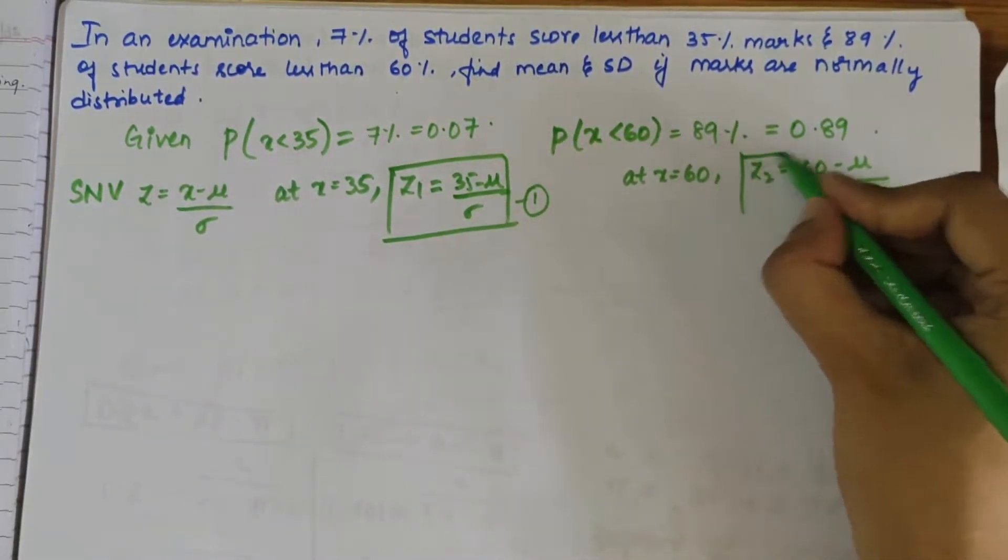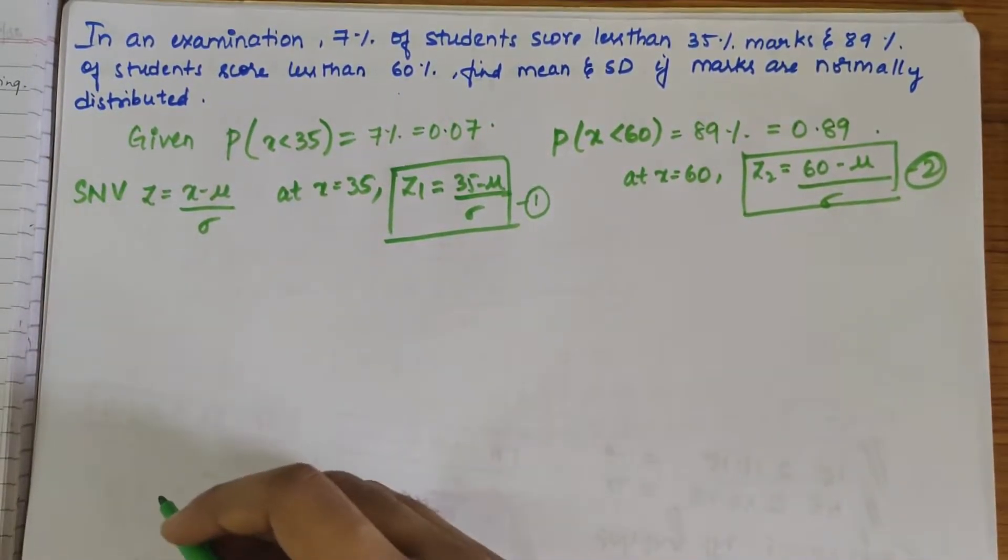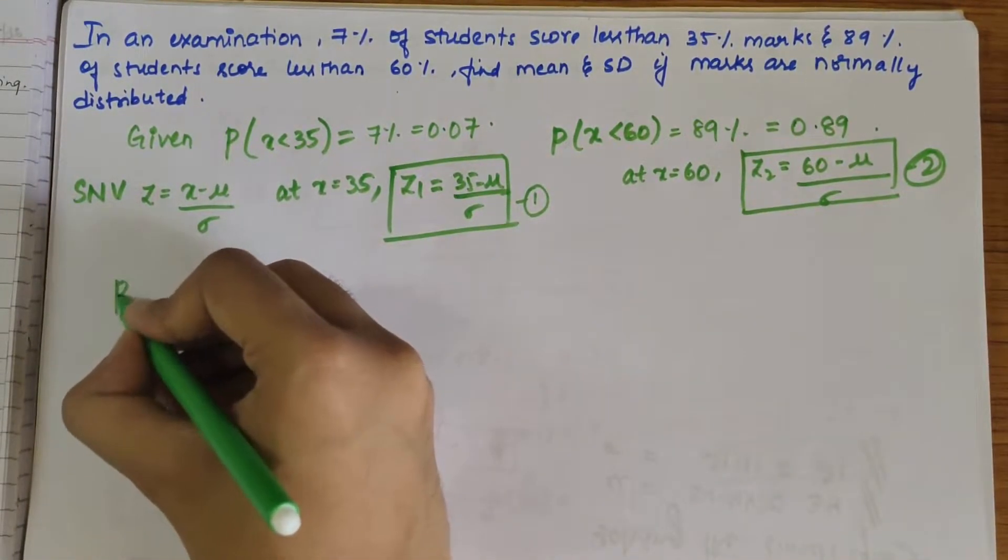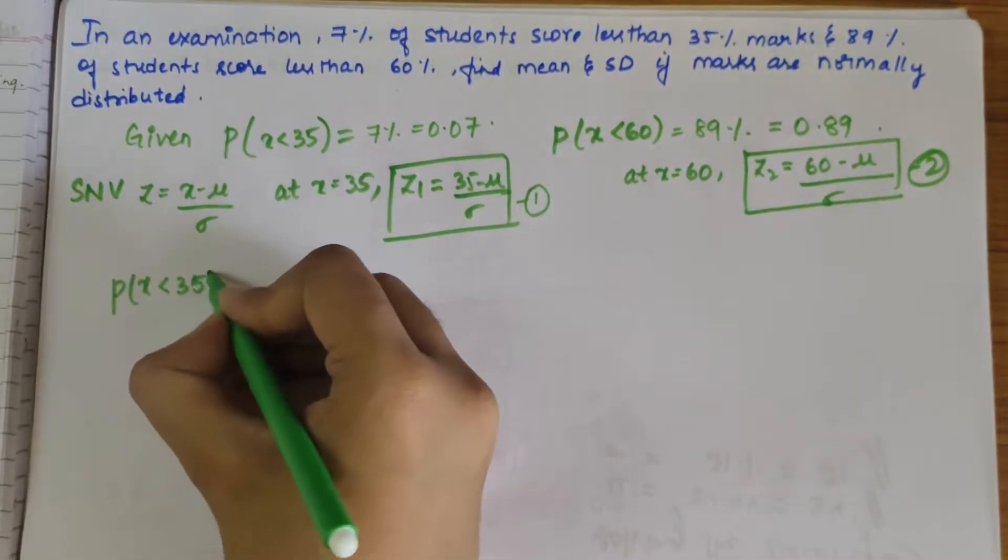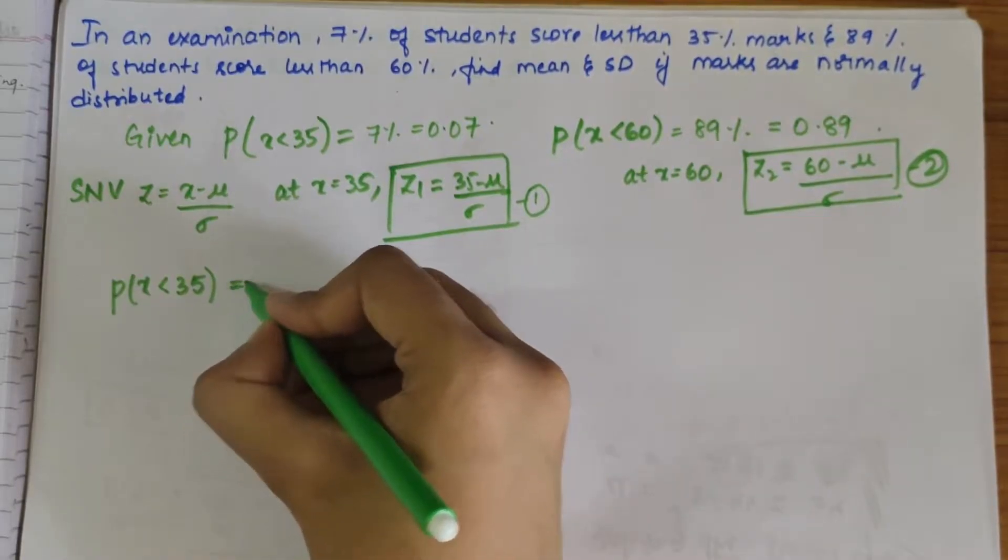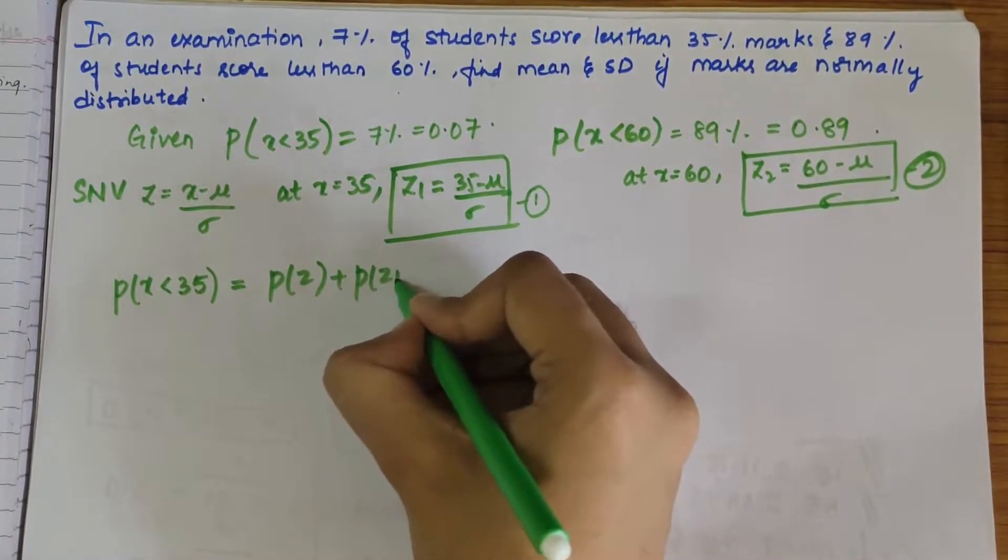So first we take this first one: P(X is less than 35), which is similar to P(Z) plus P(Z1).